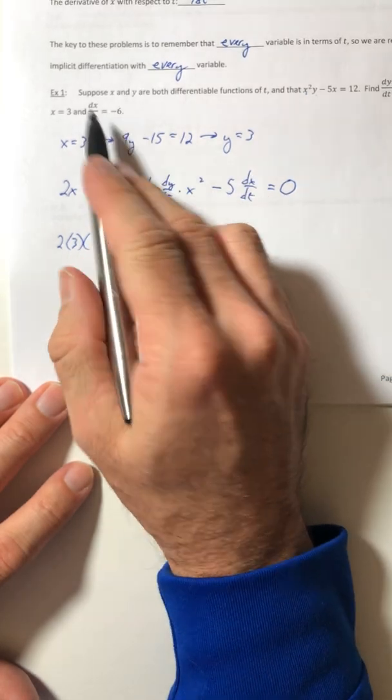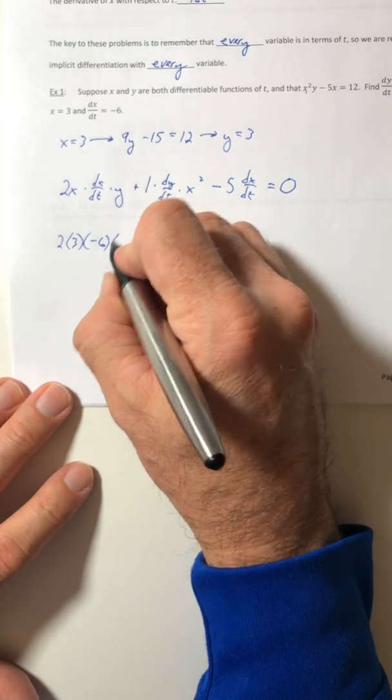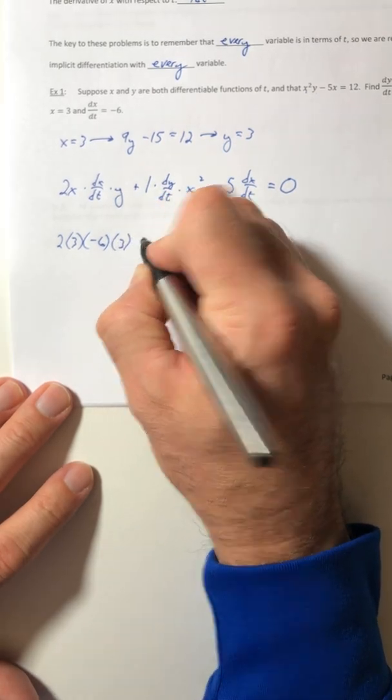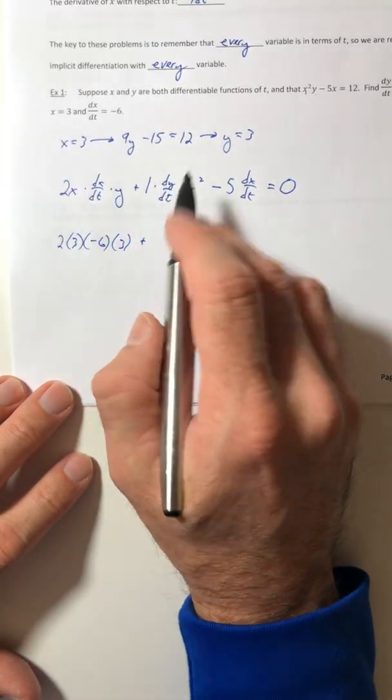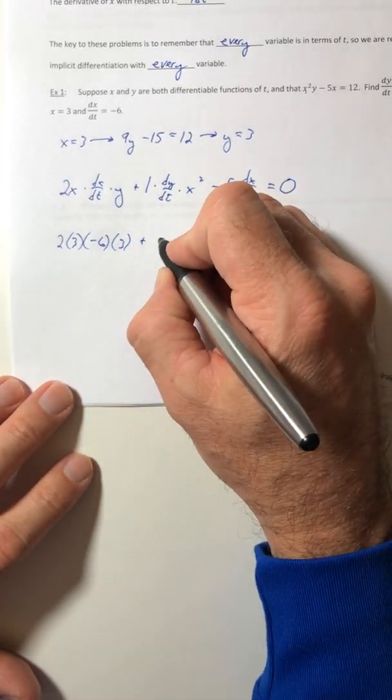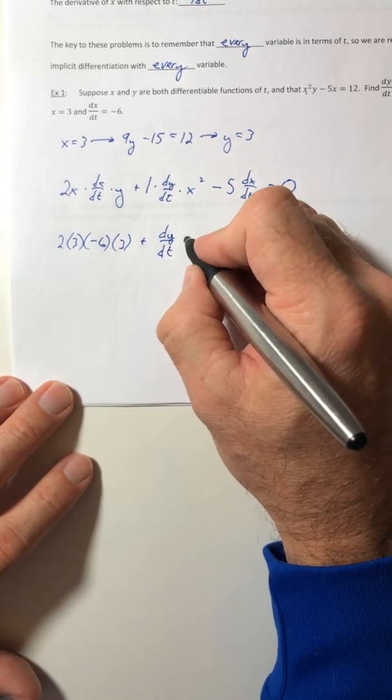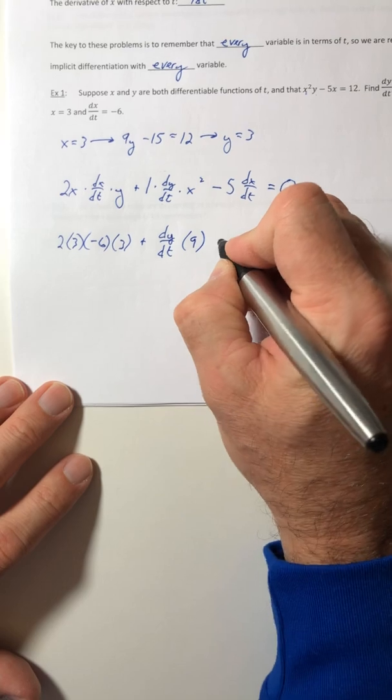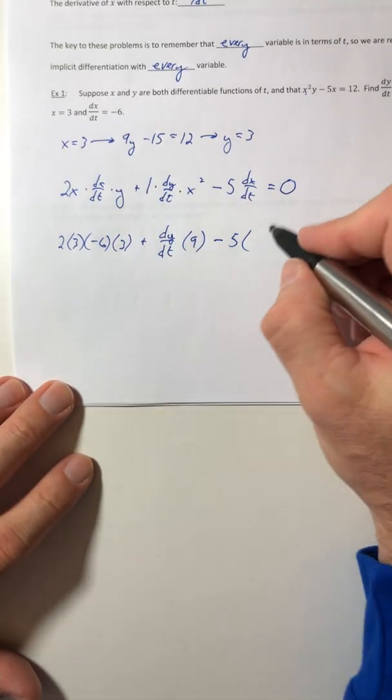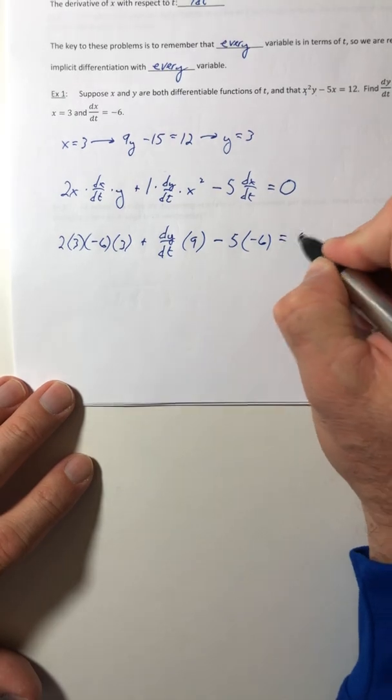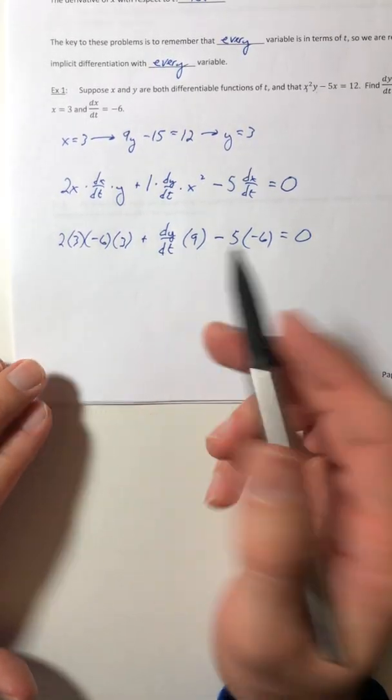So plug in the 3 for x, plug in the -6 for the dx/dt, the 3 for the y. 1 is 1, plug in the 3 for the x, the dy/dt stays where it is, and then the dx/dt is -6 still.